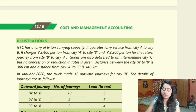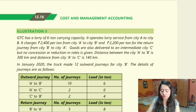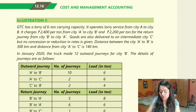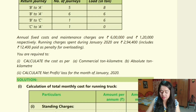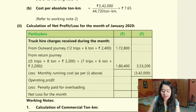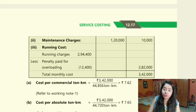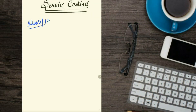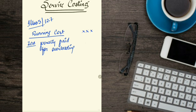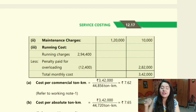For example, in service costing, if you come across illustration number five and mostly complete the question correctly but forget to deduct the penalty paid for overloading from the running cost, write in your notebook: 'When running charges appear in this type of question and there is a penalty paid for overloading, you have to deduct this.' Make a reference to illustration five on page 12.16.